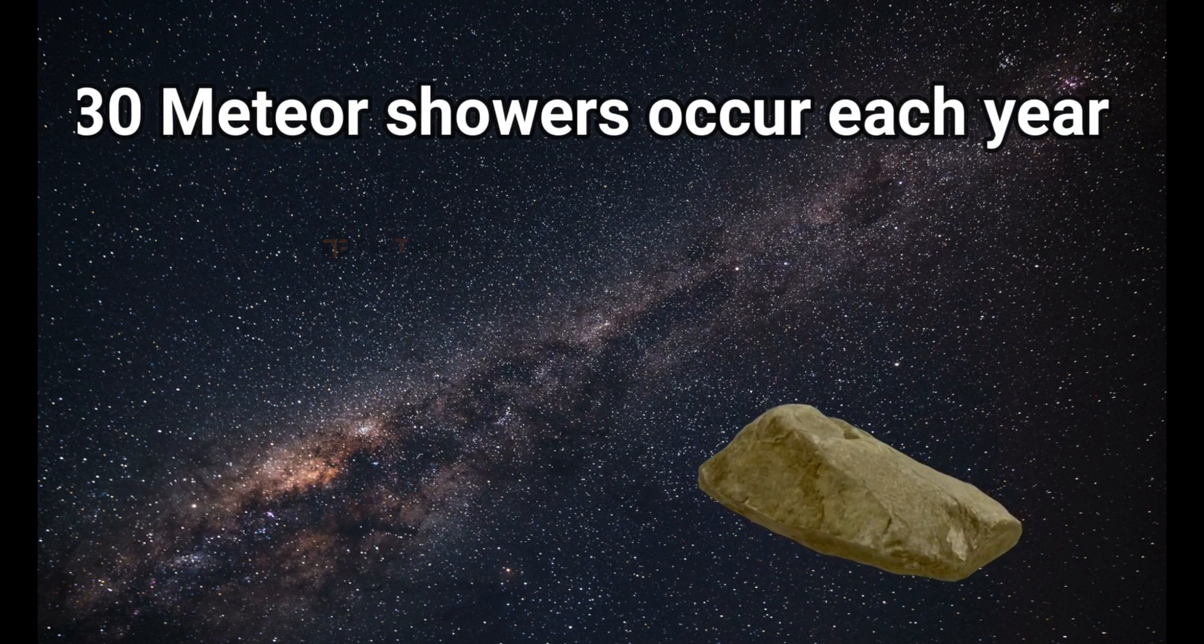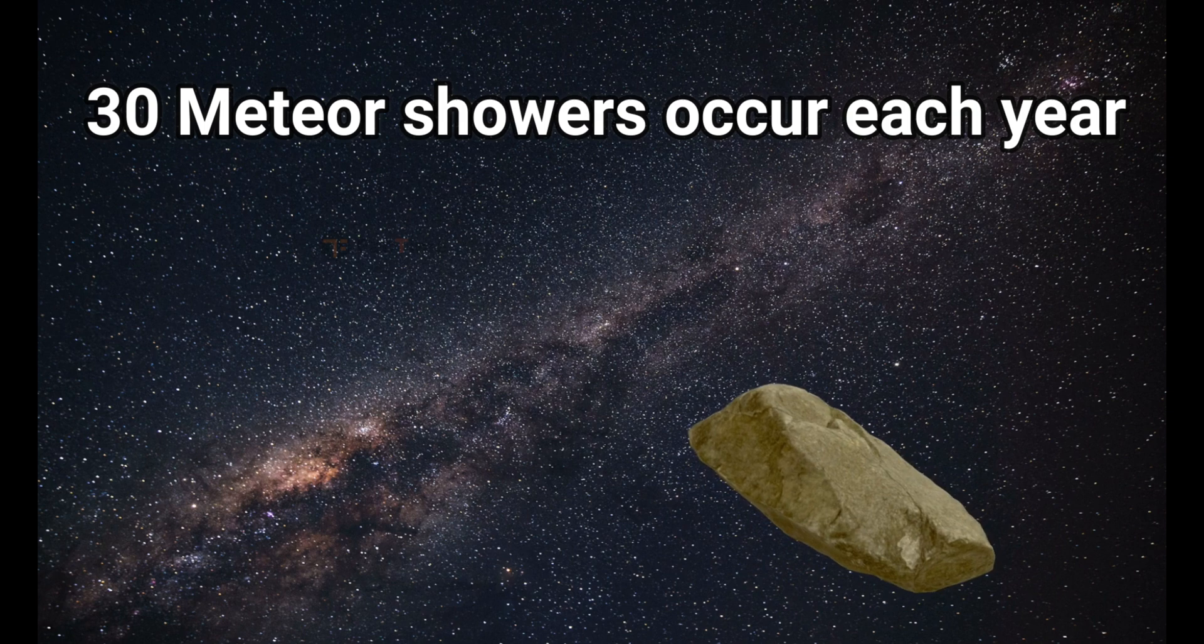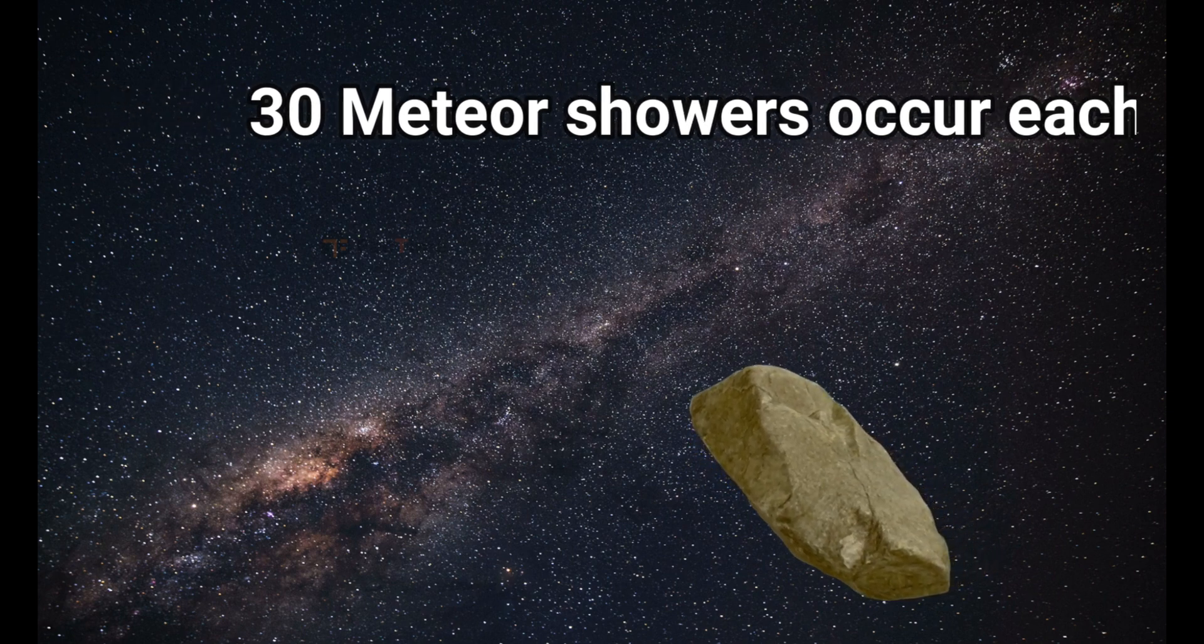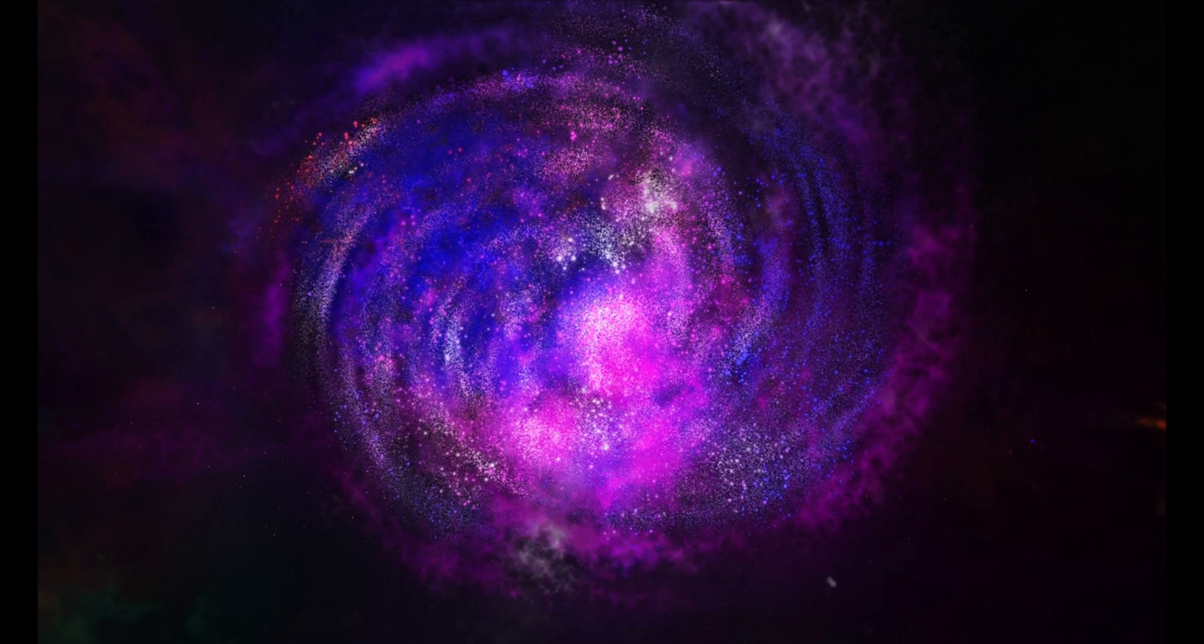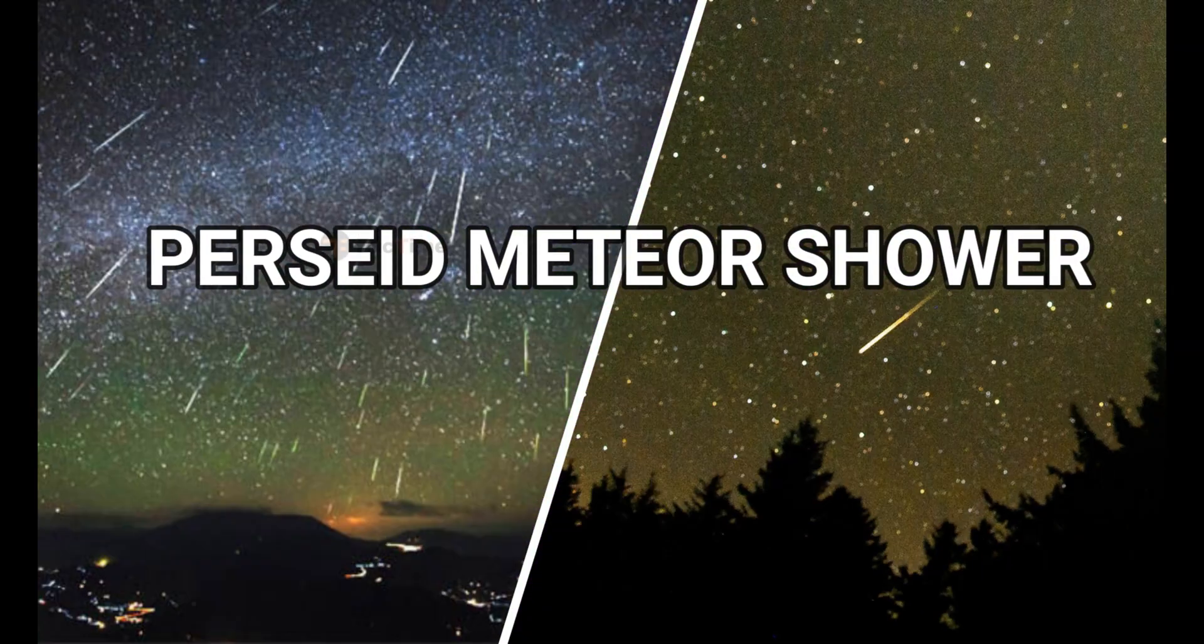Approximately 30 meteor showers occur each year that are visible to observers on earth. Some of these showers have been around longer than 100 years.